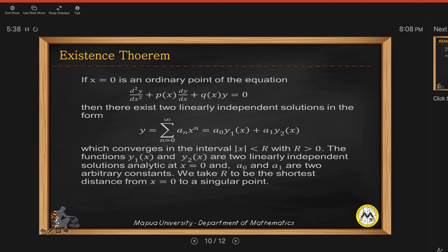Of course, r will always be greater than 0 or positive. So the functions y1 and y2 are two linearly independent solutions analytic at x equals 0. And then, as I have said a while ago, a sub 0 and a sub 1 are two arbitrary constants. So we always take r to be the shortest distance from x equals 0 to a singular point. So we always base the radius to be the shortest distance from a singular point.